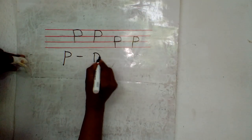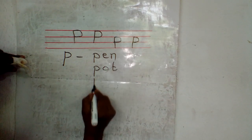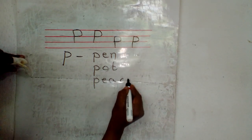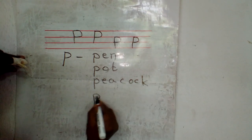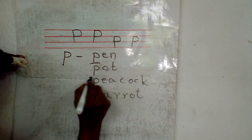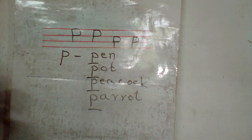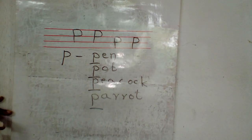P for Pen, Pot, Peacock, Parrot. P-A-R-R-O-T, Parrot. This is the first letter beginning with P. P for Pen, P for Pot, P for Peacock, P for Parrot.